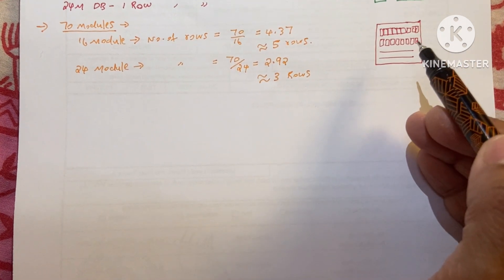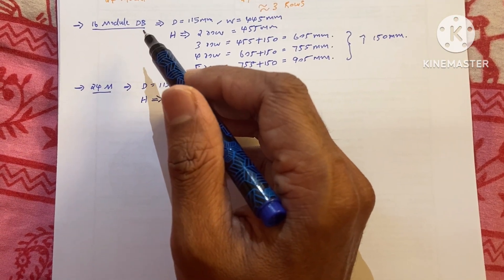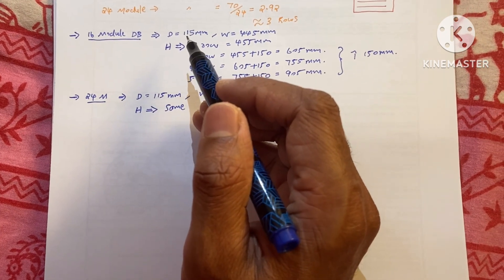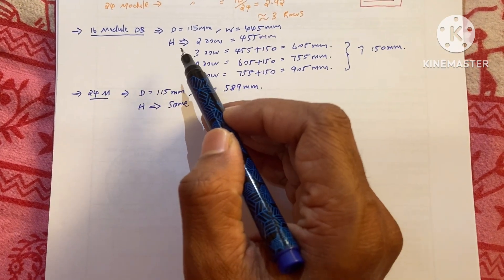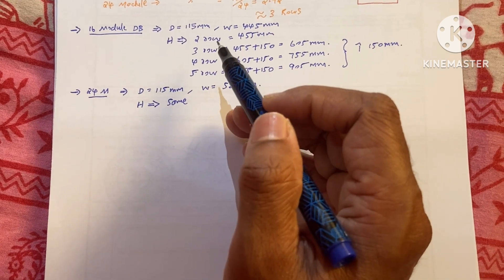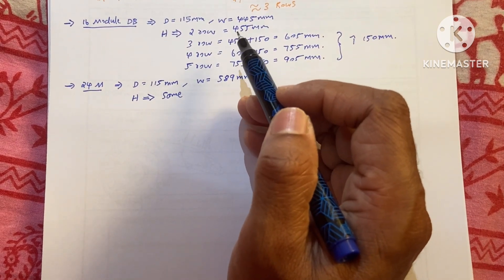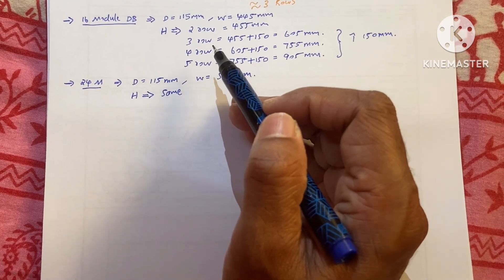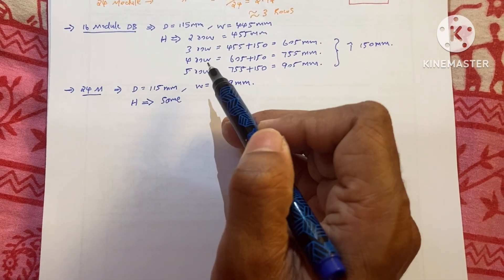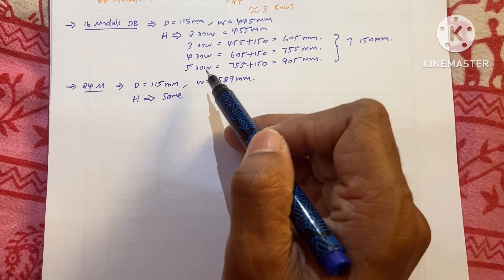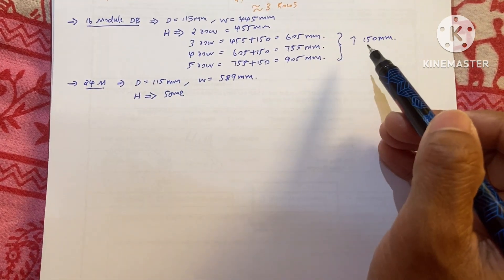For a 24-module DB with 3 rows, each row contains 24 modules. Regarding the physical size of a 16-module DB: the depth is always 115 mm and the width is approximately 445 mm. The height varies depending on the number of rows — for 2 rows the height is 455 mm, for 3 rows it is 605 mm (455 + 150), for 4 rows it is 755 mm, and for 5 rows it is 905 mm. Each additional row adds 150 mm in height.